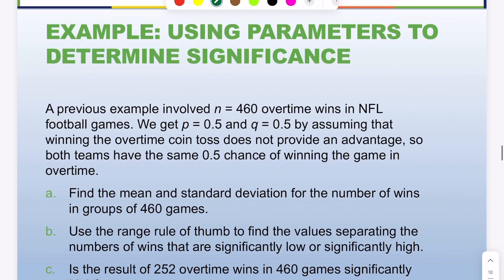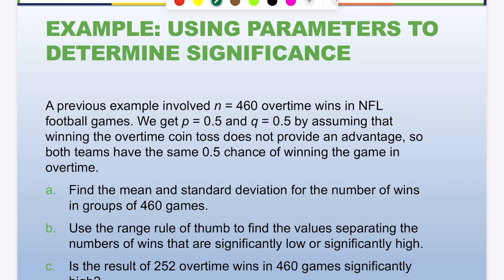Here's another example using parameters to determine significance. The previous example involved n=460 overtime games. We use p=0.5 by assuming the winning coin toss does not provide an advantage — both teams have the same 0.5 chance of winning. Find the mean and standard deviation for the number of wins in groups of 460 games. The mean is n×p = 460×0.5 = 230.